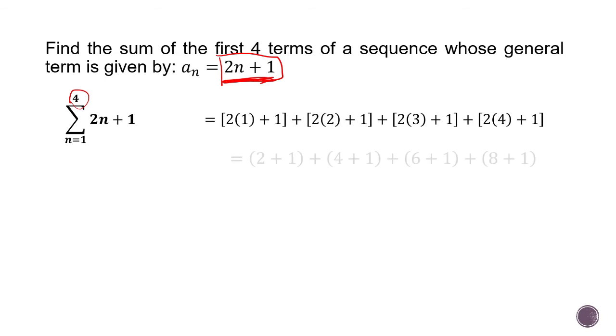So after substituting, yun simplifay mo na. Simplify further until you get the sum, which is 24. So if we are going to add the first four terms of the sequence with this general term, the answer will be 24.